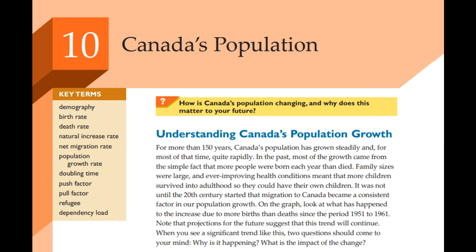The chapter also mentions that about 96 percent of Canadians are either immigrants themselves or descended from immigrants. That's almost all of us. And it's really important to acknowledge that Indigenous peoples were here long before European settlers arrived. Their history and presence is a crucial part of understanding Canada's demographics.